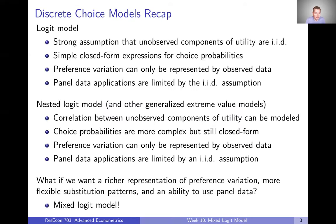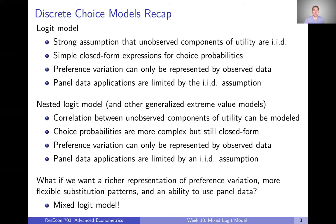Let's start with a broad overview by looking at the kinds of discrete choice models we've already talked about in this class. The first one was the logit model. This model required a strong assumption that the unobserved components of utility — those epsilons — are IID. The reason we made this strong assumption was that it generated simple closed-form expressions for choice probabilities that made estimation relatively easy.